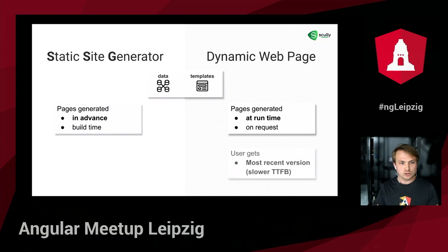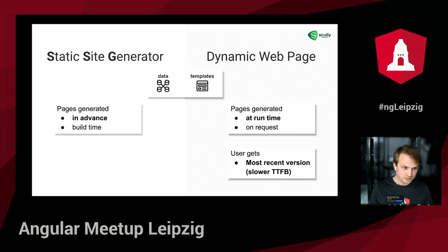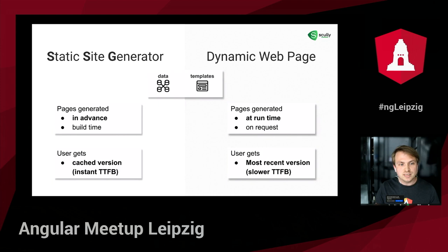With the dynamic approach the user always gets the latest version of the page, but this is typically slower because the server needs to fetch data, process the HTML templates, and return it to the browser. With a static site generator, the pages are already generated and the server only needs to return that page, meaning time to first byte is potentially much faster than with the dynamic approach.